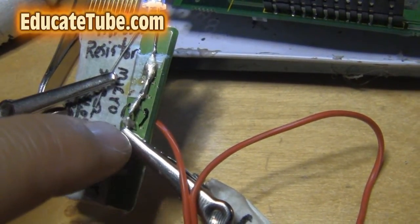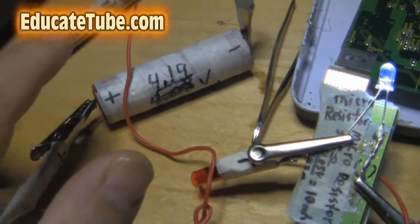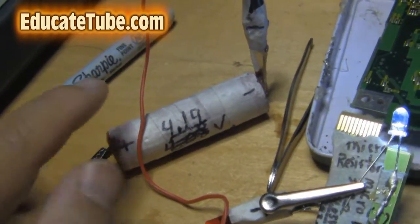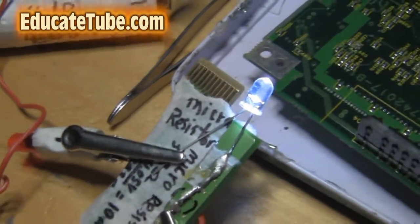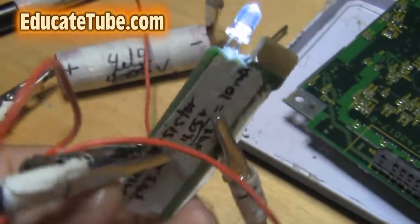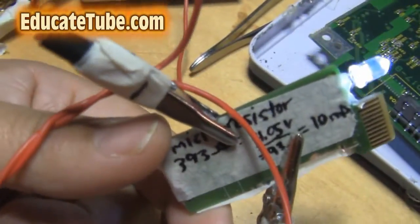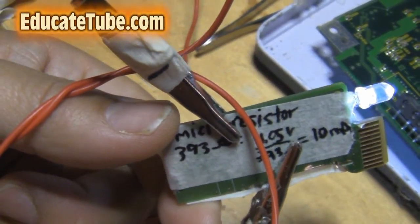I even wrote it down: micro resistor 393 ohms. 4.05 volts divided by 393 ohms gives you about 10 milliamps, so there's 10 milliamps of current running through.